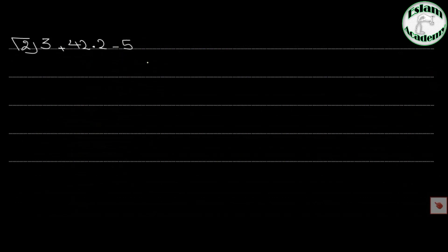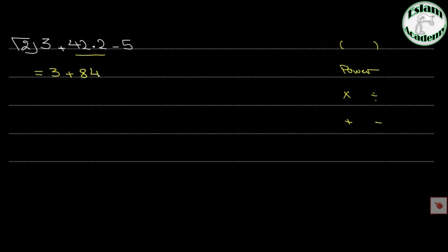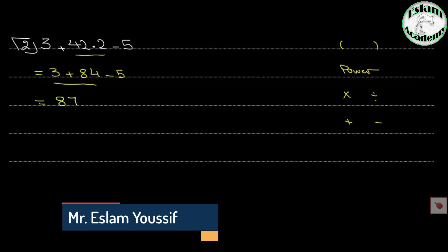Number 2: 3 plus 42 times 2 minus 5. We follow brackets, then power, then multiply or divide, then plus or minus. There is no bracket and no power, so we look for multiplication. We get 3 plus 42 times 2, which is 84, minus 5. Now we have addition and subtraction, solving left to right: 3 plus 84 is 87, minus 5 equals 82.